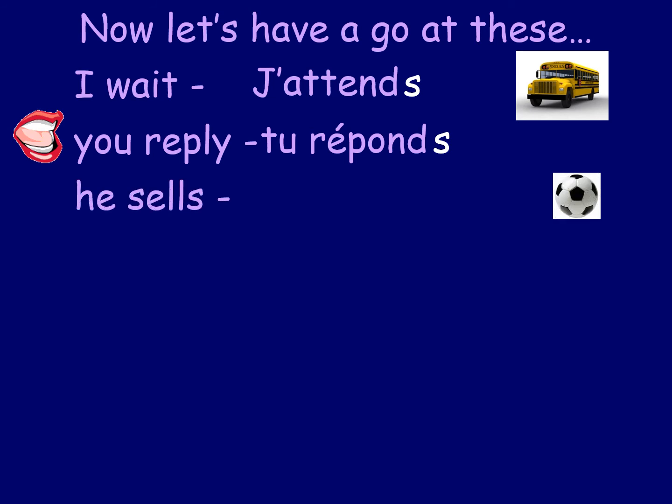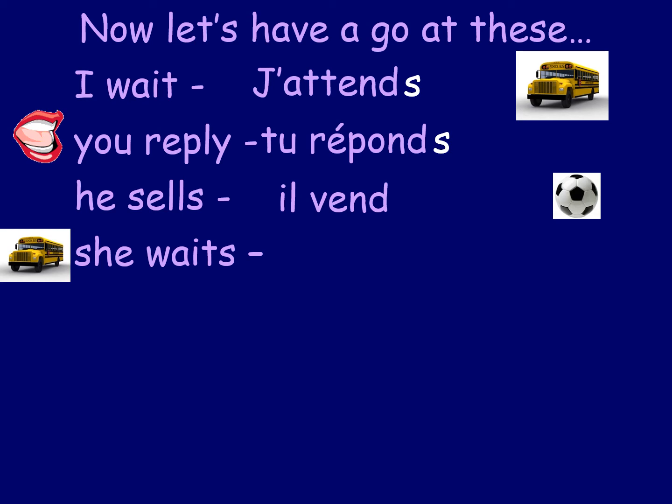Next, 'he sells' — maybe he's selling a football: 'il' plus 'vendre'. Take off the RE and this time add nothing, because the ending for il/elle is blank — 'il vend', he sells. Then 'she waits': 'elle' plus 'attendre'. Knock the RE off the end and add nothing — 'elle attend', she waits or she is waiting.